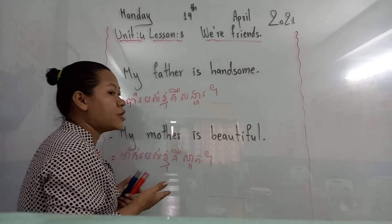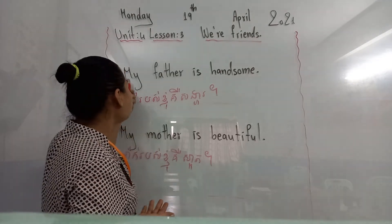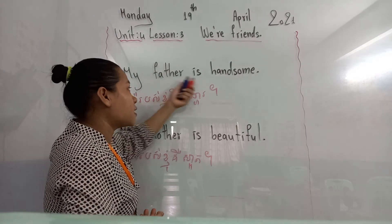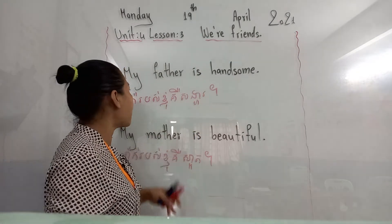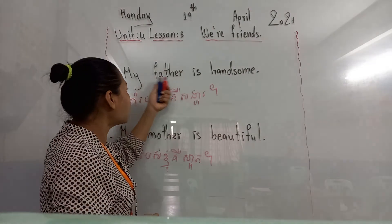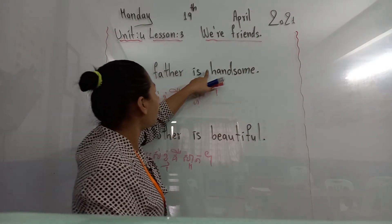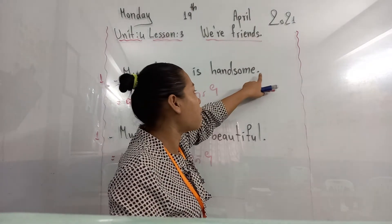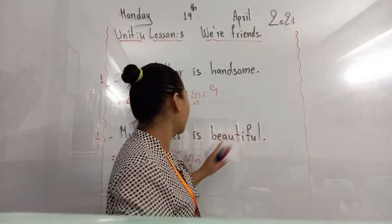When you copy in your notebook, note all together. The first letter of the sentence should be uppercase. One word to the next word should have a space. And the end of the sentence should have a full stop. Don't forget the full stop.